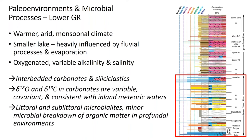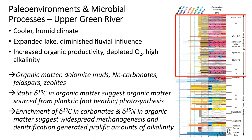In the Upper Green River, the climate was cooler and more humid. The lake expanded and had diminished fluvial influence. This resulted in increased organic productivity, creating anoxic conditions. This resulted in accumulation of organic matter, saline muds, sodium carbonates, split spars, and analcite. Static carbon isotopes in organic matter relative to carbon isotopes in carbonate suggest that organic matter was sourced from planktonic, not benthic, photosynthesis. Periodic enrichment of carbon isotopes in carbonates and nitrogen isotopes in organic matter suggest that widespread methanogenesis and denitrification generated prolific amounts of alkalinity in the system, and this is evidenced by the abundance of dolomite.